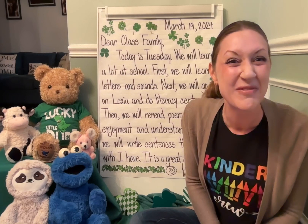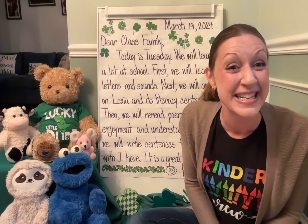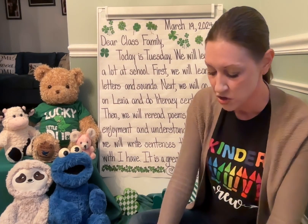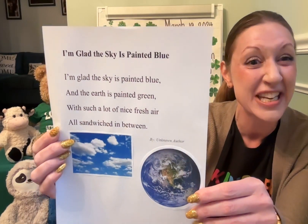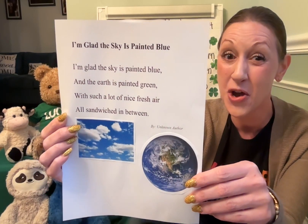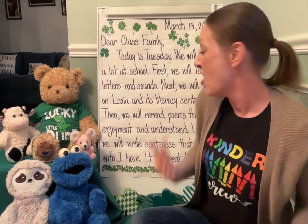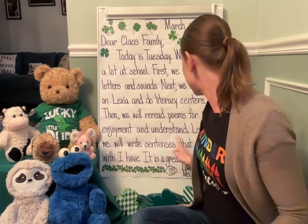Then we will reread poems for enjoyment and understanding. Good readers read things again — that's called rereading. So we'll be rereading some different poems for understanding and hearing some new poems as well. Remember this one: 'I'm glad the sky is painted blue, I'm glad the earth is painted green, with such a lot of nice fresh air all sandwiched in between.' The author of this poem is unknown. We're going to reread this poem and lots of others, enjoying and immersing ourselves in many different types of poetry.